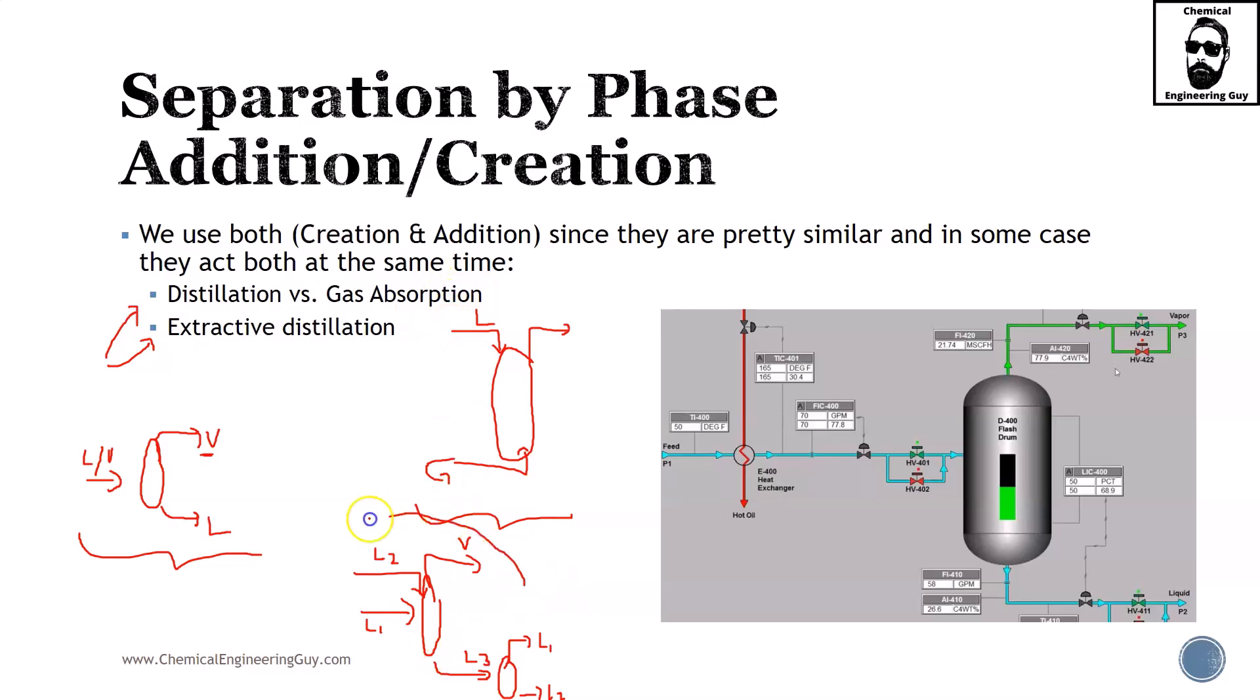The main question is how to categorize this process. Should we arrange it with normal distillation or add it to the second section? By definition, we are creating a phase. That's why in my opinion it's much easier to assume that phase addition and phase creation are both pretty similar, and it is much more convenient to analyze it this way.